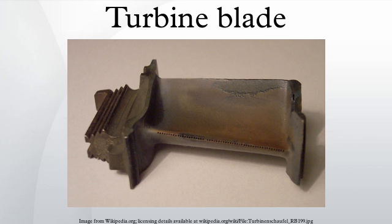Another major improvement to turbine blade material technology was the development of thermal barrier coatings. Where DS and SC developments improved creep and fatigue resistance, TBCs improved corrosion and oxidation resistance, both of which become greater concerns as temperatures increased.